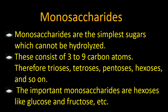Monosaccharides consist of three to nine carbon atoms. When they have three carbon atoms they are termed trioses; four carbon atoms — tetroses. The terms change according to the number of carbon atoms: three is represented by trioses, four by tetroses, five by pentoses, and six carbon atoms are represented by hexoses, and so on.